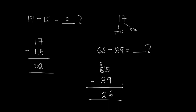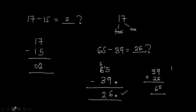Let's verify that answer. If 65 minus 39 equals 26, then 39 plus 26 should give us 65 back. Adding 9 and 6 gives 15 — write down 5 and carry 1. That 1 comes to the tens: 3 plus 1 becomes 4, and 4 plus 2 gives 6. So we get 65, which confirms our answer of 26 is correct.